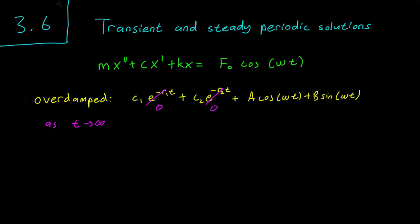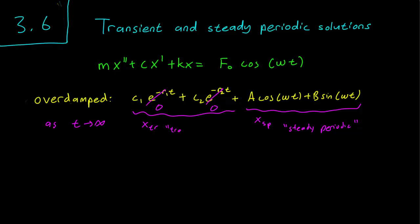For that reason, the cosine and sine part is going to be called the steady periodic solution, x_sp, and the exponential part is going to be called x_tr, or the transient solution.